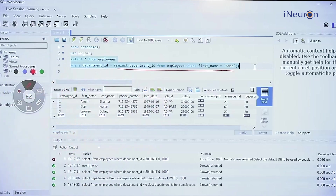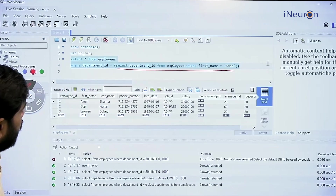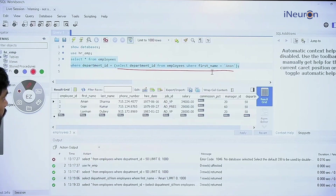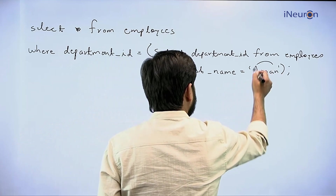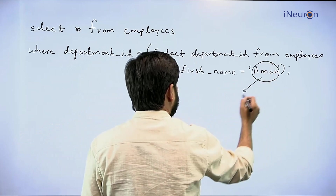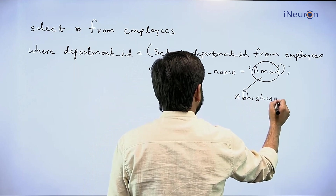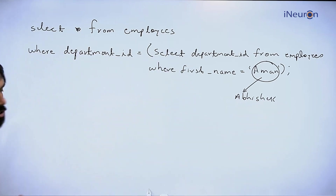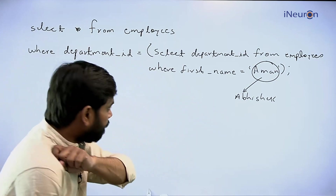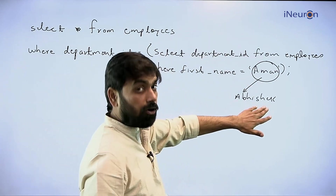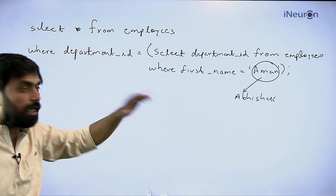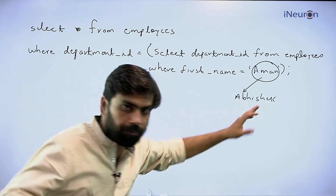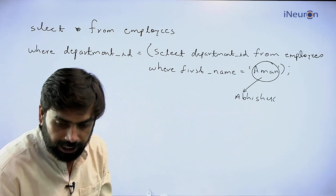Now if I take the same query and change the name from Aman to Abhishek, what should ideally happen is that it should fetch Abhishek's department ID, pass it to the outer query, and return the entire data of the department where Abhishek is working. Let me move to the workbench and try that.